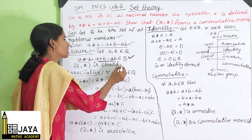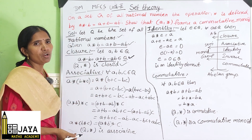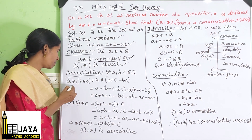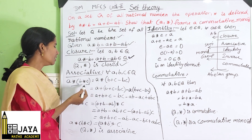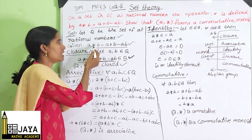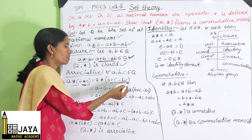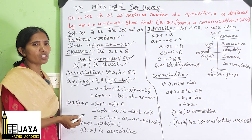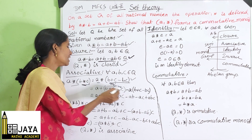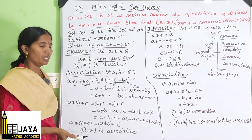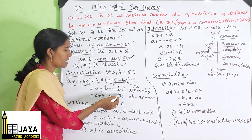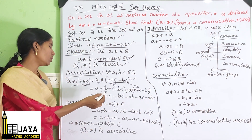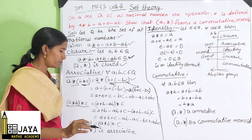For the associative property, we compute (A★B)★C. First, A★B = A + B − AB. Then B★C = B + C − BC. So (A★B)★C expands to: A + B + C − BC − AB − AC + ABC.